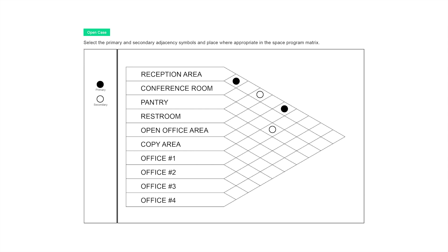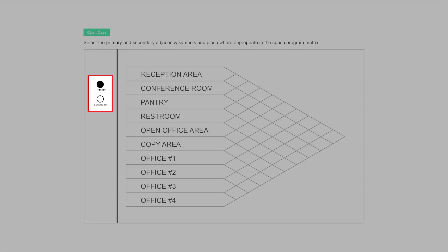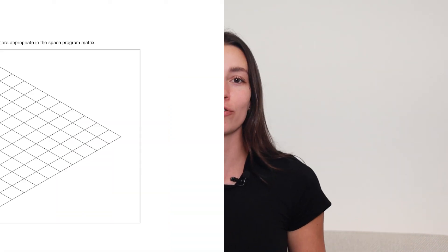Your adjacency matrix will be given to you either partially or completely blank, and your job is to place the primary and secondary symbols in the correct positions. The primary adjacency symbol is typically shown as a black filled-in circle, while the secondary adjacency is typically shown as a black outline, although this format may change for future test versions. Think of this graph as a row of boxes that intersect — if two spaces have an adjacency, the symbol will be placed in the box that touches the rows of both spaces.